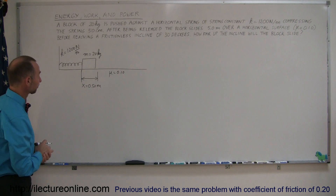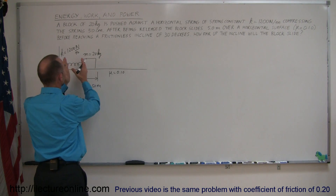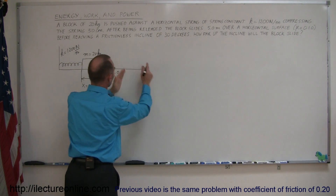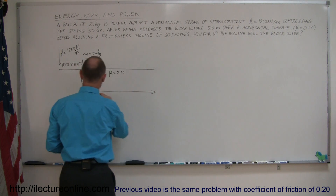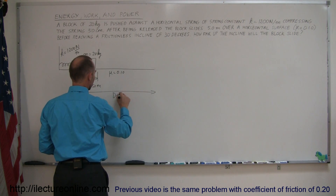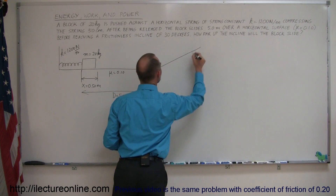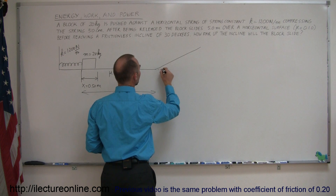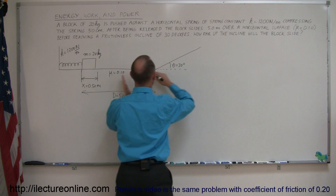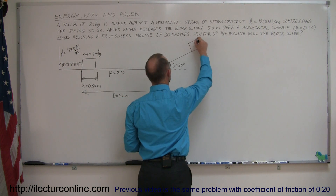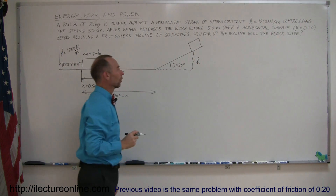50 centimeters is a half a meter. After we release the block, the spring pushes the block over the surface and it will travel a distance D of 5 meters before reaching the incline. The incline, according to the problem, is frictionless. The angle theta is equal to 30 degrees, and the block will slide up the incline before it comes to a complete stop, reaching a height h above the horizontal surface.